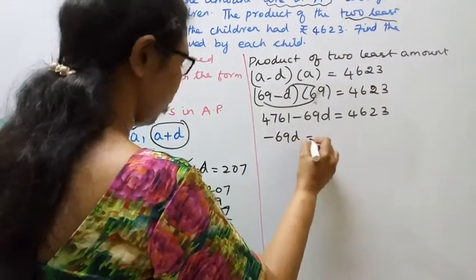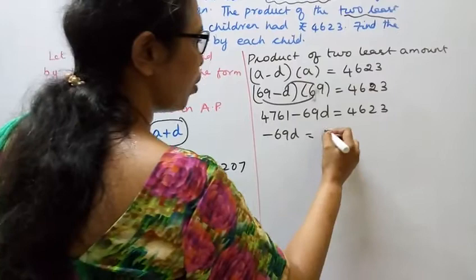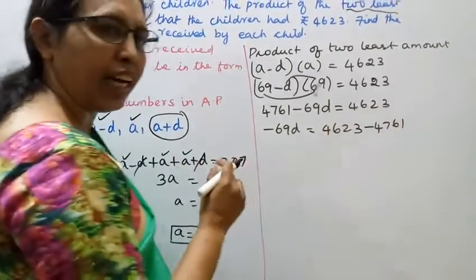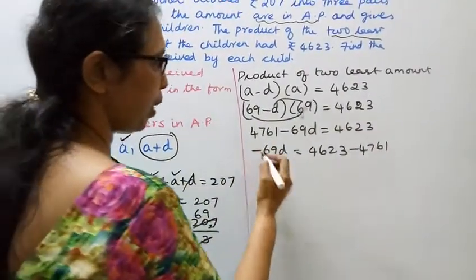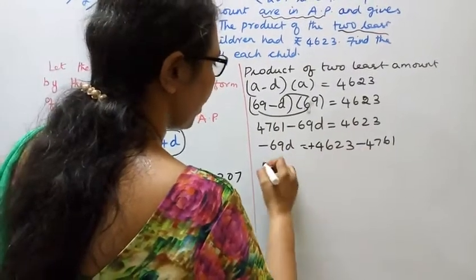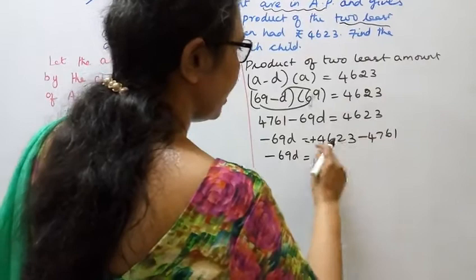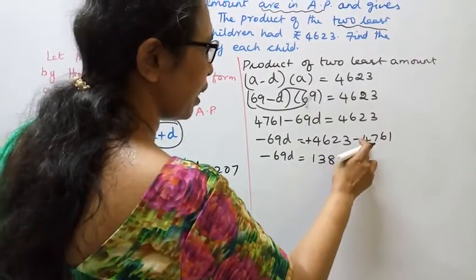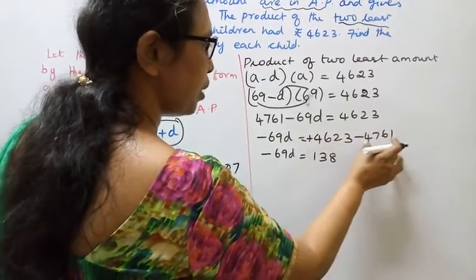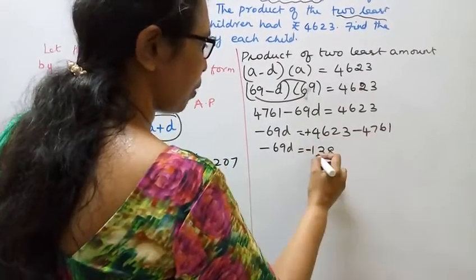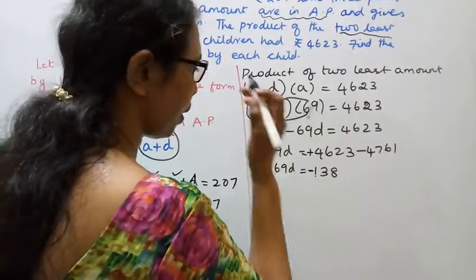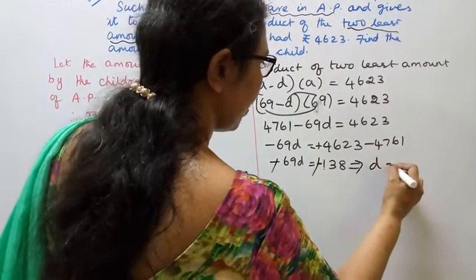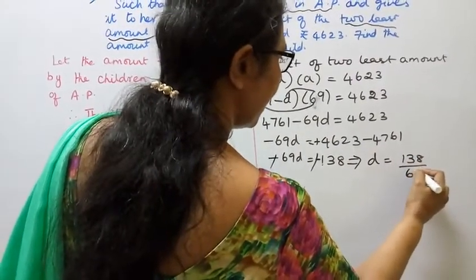Rearranging: minus 69d equals 4,623 minus 4,761, which gives minus 69d equals minus 138. Therefore d equals 138 divided by 69, which gives d equals 2.